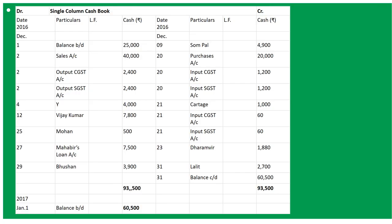Next: paid to Sompal and discount received. So on December 9th credit side: 'By Sompal' 4,900. The discount received entry we will do in the working note. December 12th: received from Vijaykumar and discount allowed - 'To Vijaykumar' 7,800. Discount allowed will also be done in the working note.